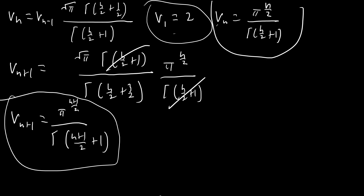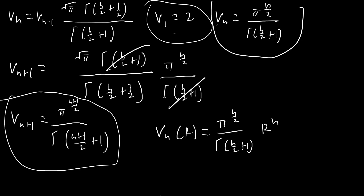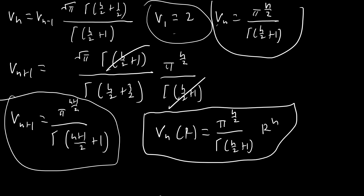So our formula for the volume of an n-dimensional hypersphere of radius r is: Vₙ(r) = π^(n/2) / Γ(n/2 + 1) · rⁿ. Pretty cool!